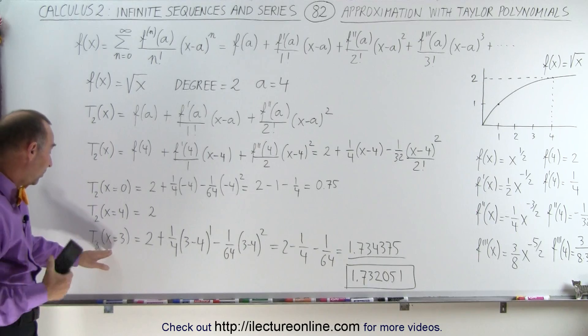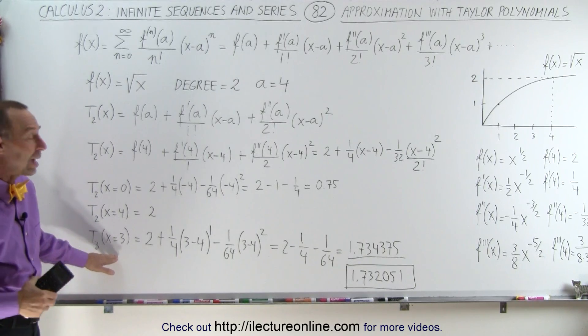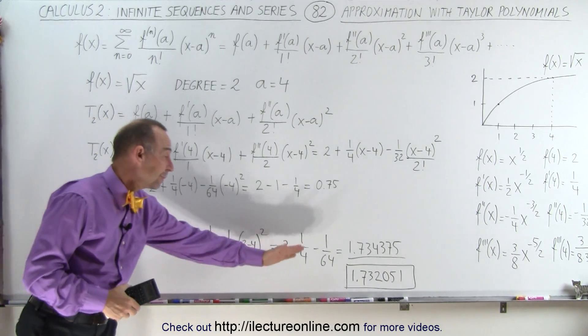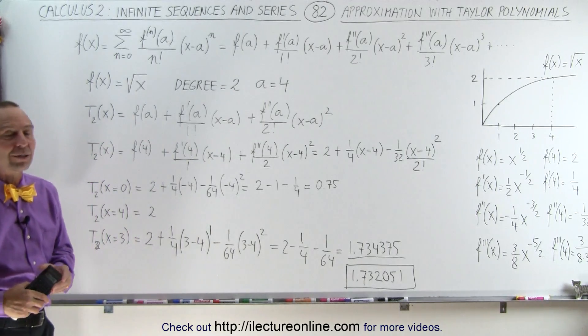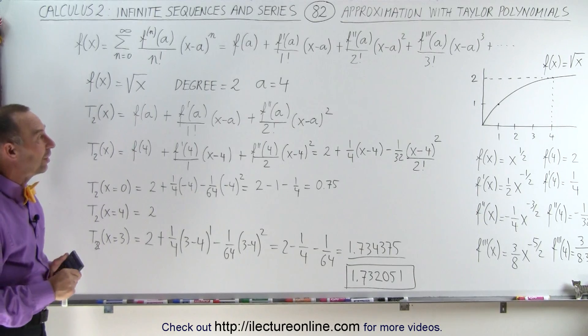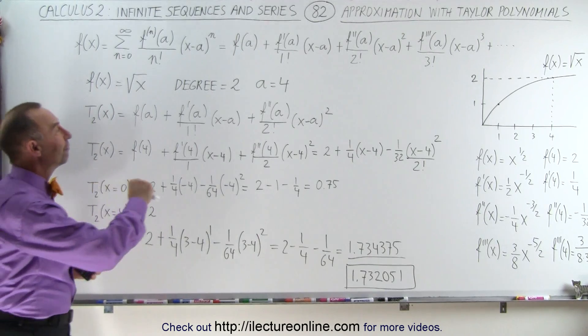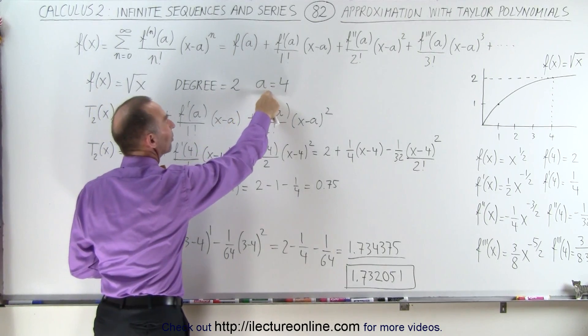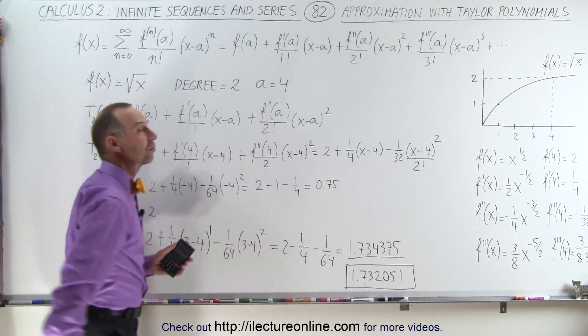And if I had picked, say, x equals 3.9, after three terms, we'd almost be exactly at the correct value for the function. So, bottom line, why do we use a Taylor series? To evaluate a function very close to the value we give to the number a in our Taylor series expansion. And that's how it works.